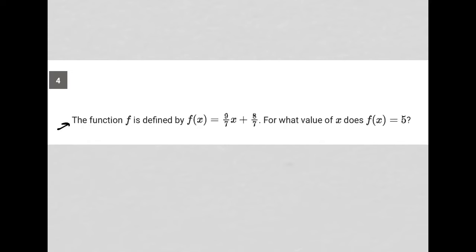This question says the function f is defined by f(x) = (9/7)x + (8/7). For what value of x does f(x) equal 5?